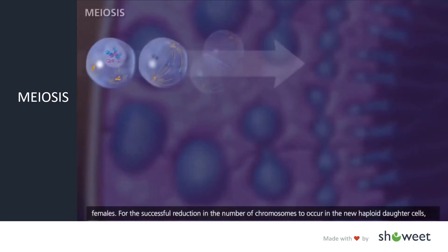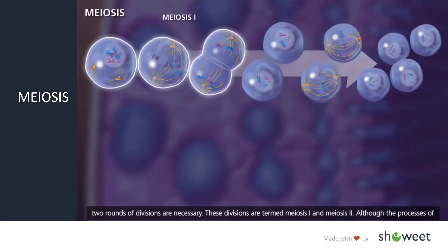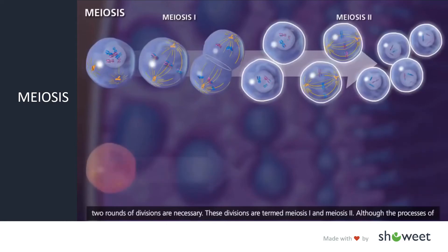For the successful reduction in the number of chromosomes to occur in the new haploid daughter cells, two rounds of divisions are necessary. These divisions are termed meiosis 1 and meiosis 2.